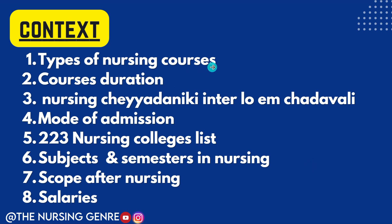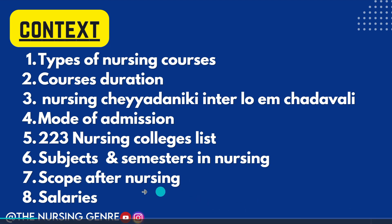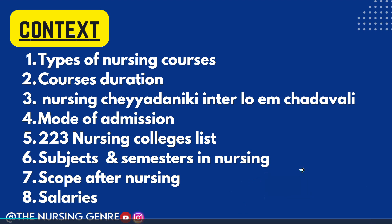There are many nursing courses in AP. There is a duration, a mode of admission, and in this video there are 223 nursing colleges. There are subjects. At present in 2024, as a clinical nurse, there is scope. If you have a nursing course, there are salaries. I am going to explain this video.